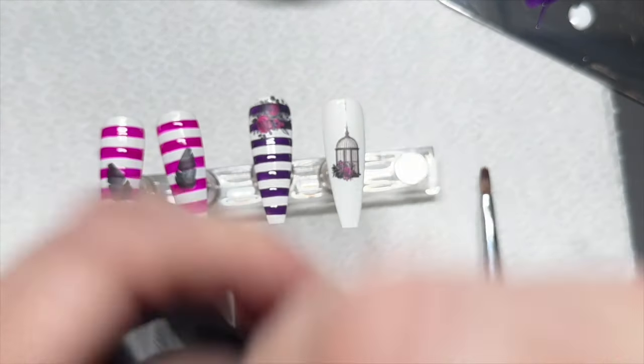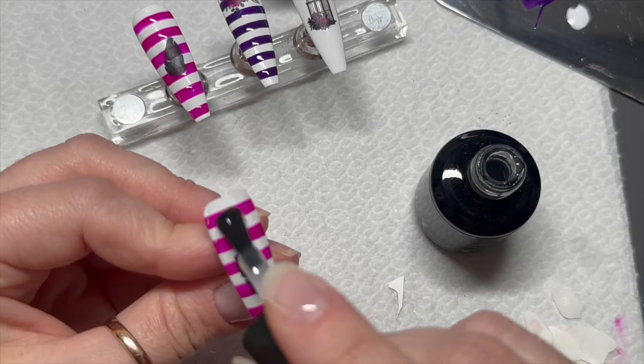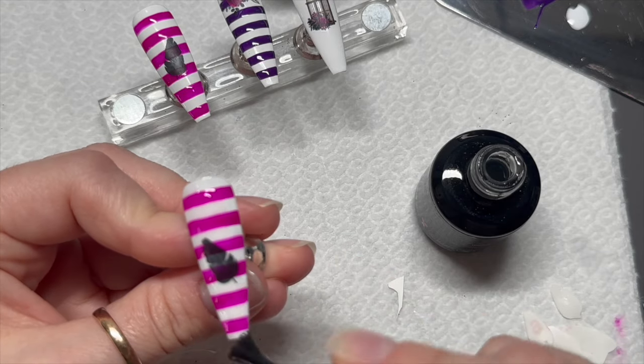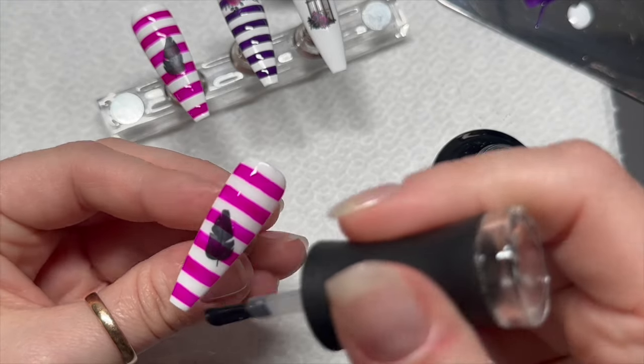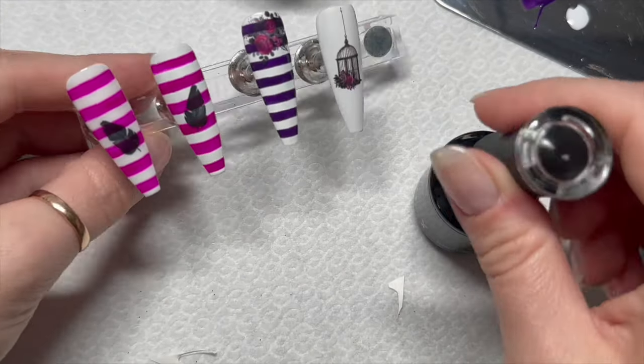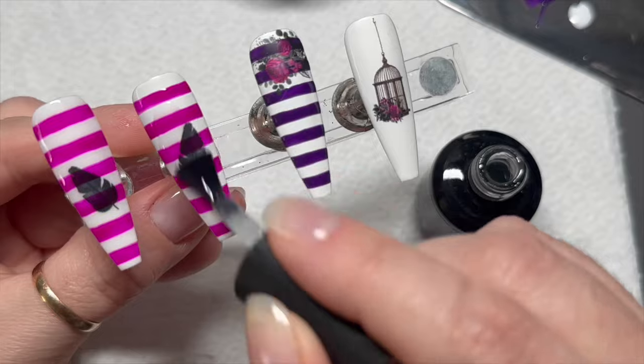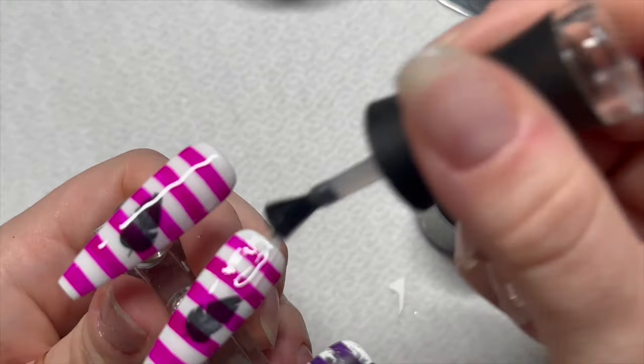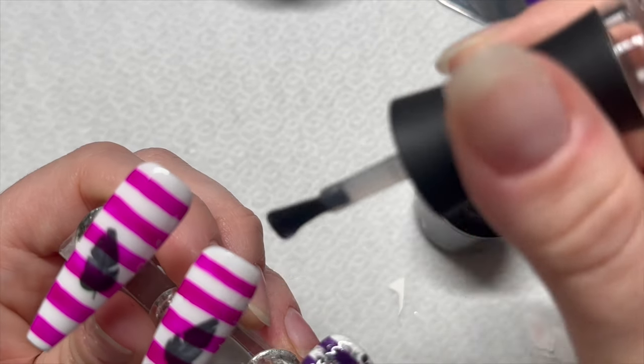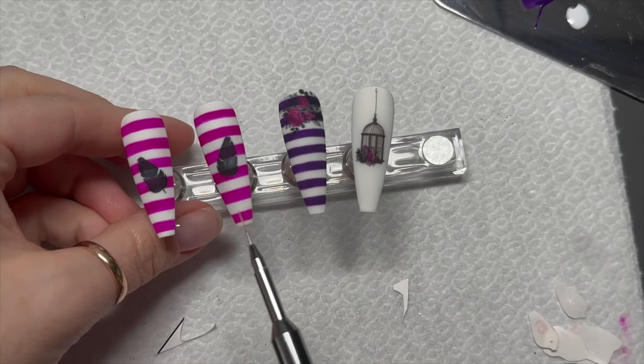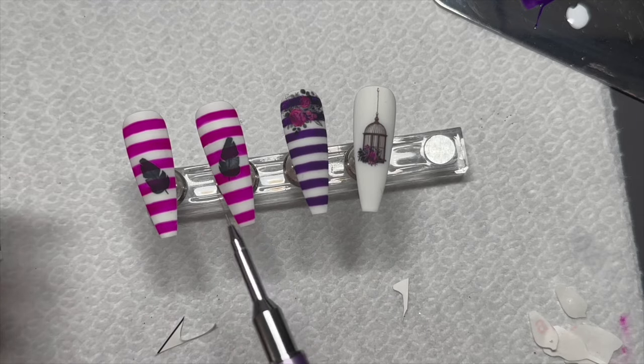Before I do the next part—I don't know why I was wiggling my fingers around then—I'm going to take my velvet matte top coat and top coat all of these nails. I do want them matte finished. If you prefer shiny, use your shiny. If you've been here for a while, you know that I like matte.